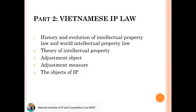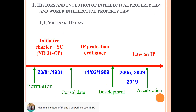In part two, the book discusses Vietnamese IP law — its history and evolution of intellectual property law, as well as world intellectual property law theory, judgments, and objects of IP. From the development of Vietnam since independence, we developed some law related to inventions. In 1981 we consolidated until 1989, and then the Law on Intellectual Property was enacted in 2005, amended in 2009 and 2019, and further accelerated to 2022.